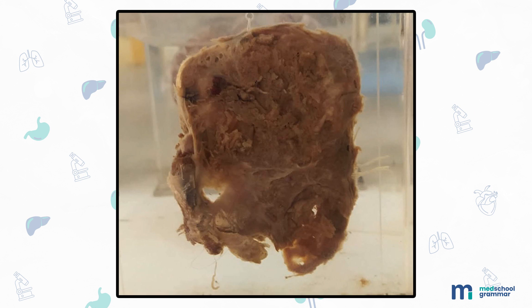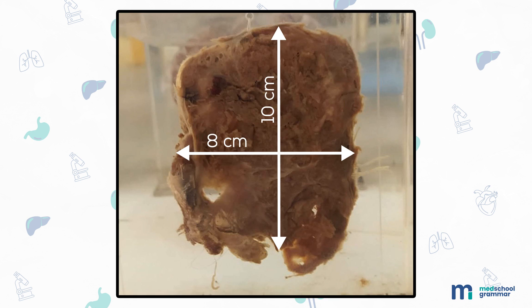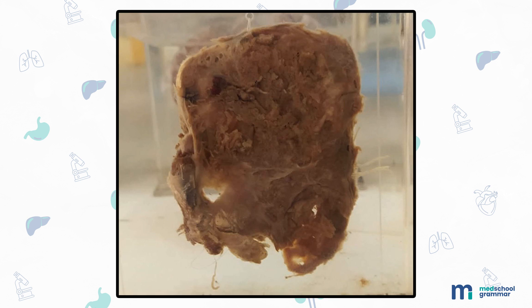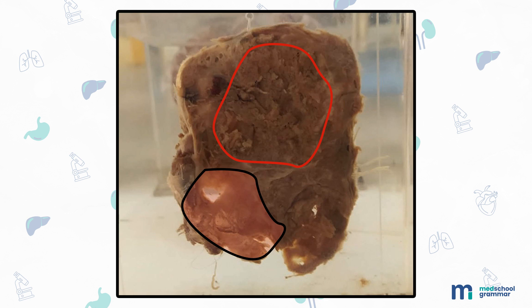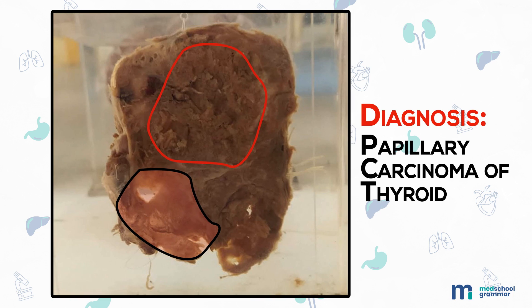The last specimen for the day is a specimen of thyroid gland, enlarged in size and measuring 10 by 8 by 1 centimeter. The normal parenchyma represented by colloid-filled cysts is seen at one pole. The remaining gland is replaced by tumor which is pinkish-white and showing a furry surface. Central areas show breakdown and multiple papillary projections. Chalky-white areas of calcification are seen at the periphery. Diagnosis: papillary carcinoma of thyroid.